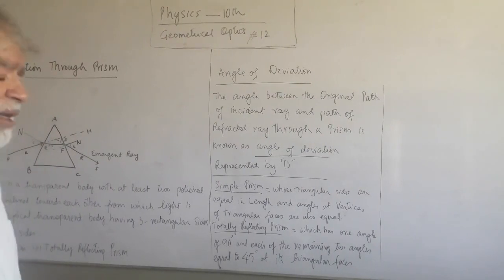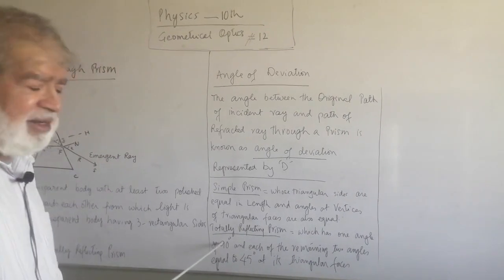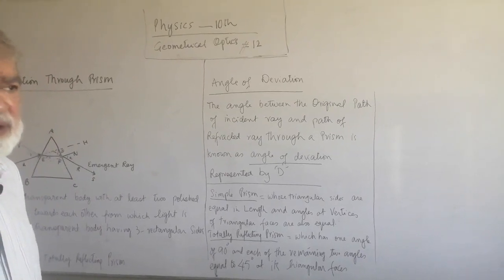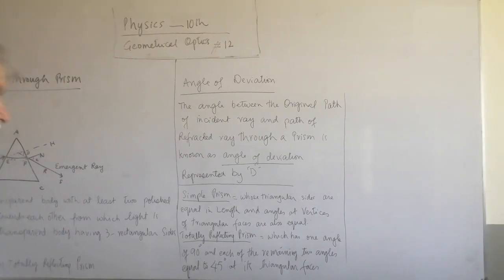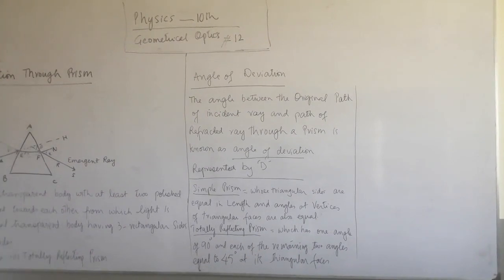A simple prism is one whose triangular sides are equal in length and their angles are also equal at the vertices. And totally reflecting prism is one which has at least one angle of 90 degrees at the vertex, and the other two are 45 degrees each. That is known as totally reflecting prism.